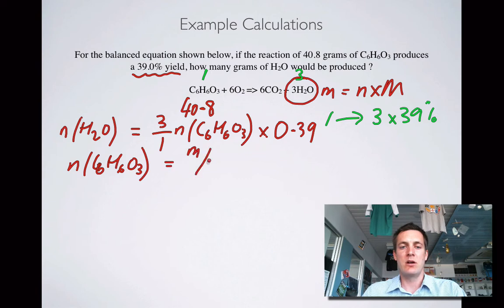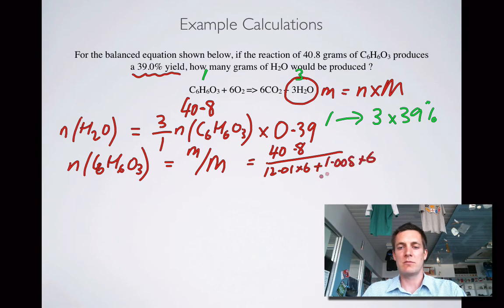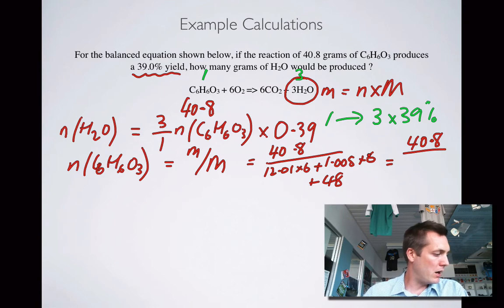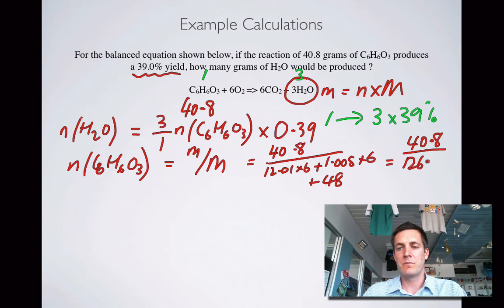So let's find the number of moles of C6H6O3 and that is equal to its mass over its molar mass which equals 40.8 over 12.01 times 6 plus 1.008 times 6 plus 48 for the oxygens, which is 40.8 divided by 126.1.